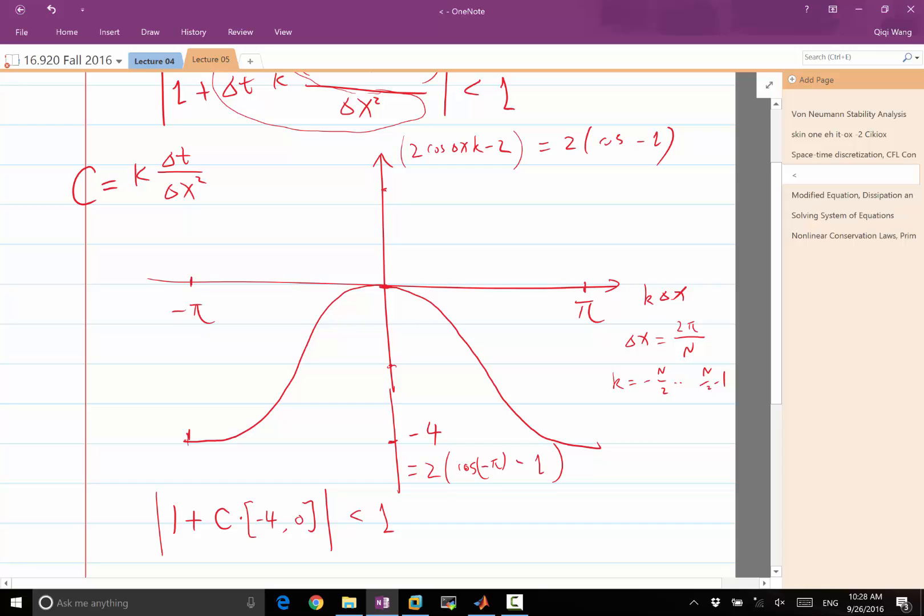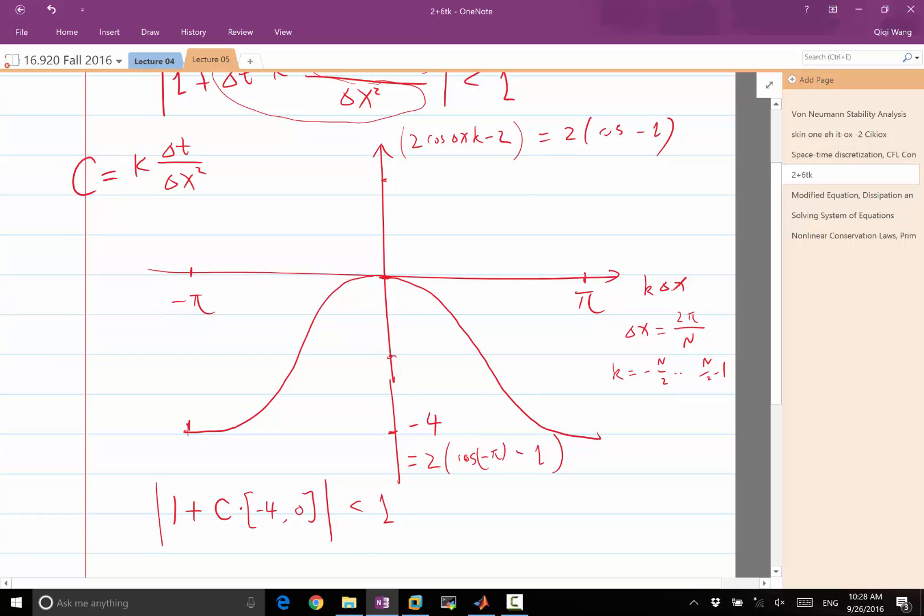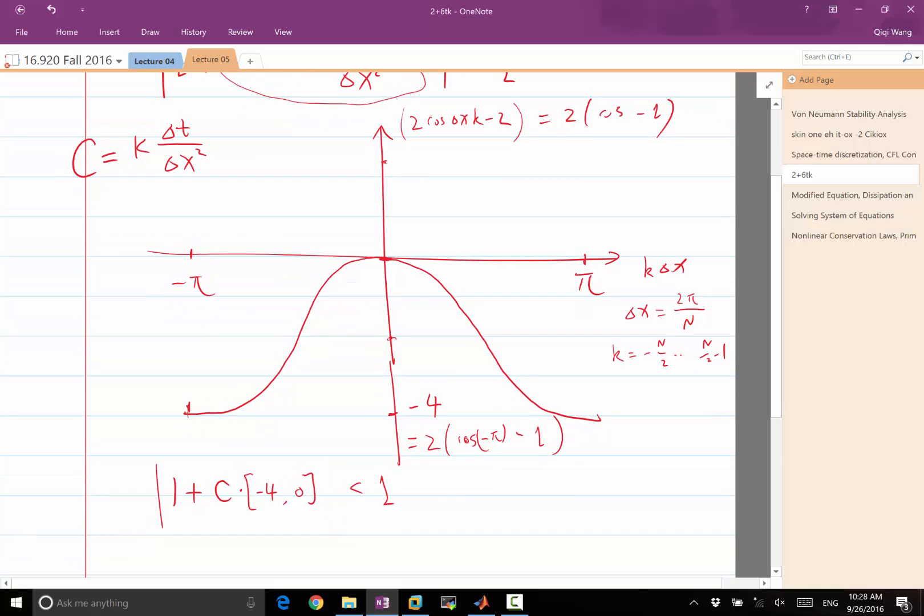So we're taking the absolute value here. That means without the absolute value it has to be less than 1 and greater than minus 1.